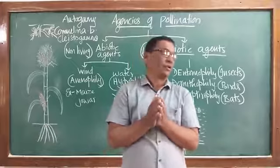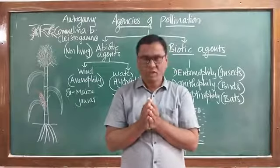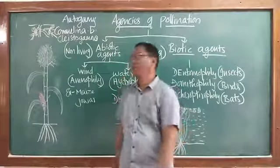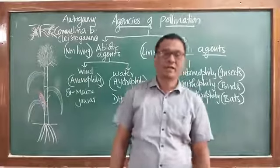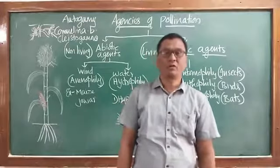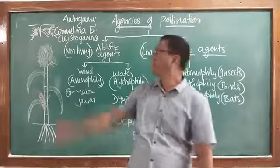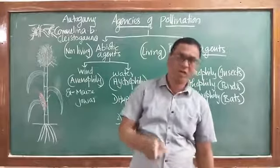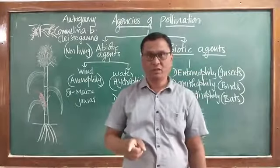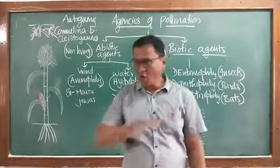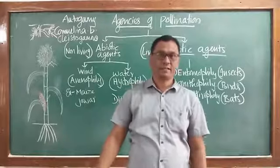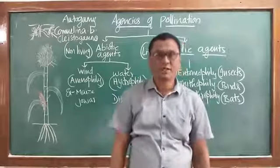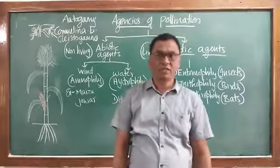When a flower, due to some adaptations, favors only one kind of pollination, such a characteristic is known as a contrivance for pollination. The cleistogamous flowers of Commelina favor only autogamy and totally avoid cross-pollination; hence they are an example of contrivance of autogamy or self-pollination.